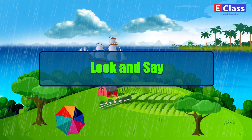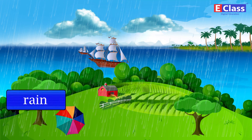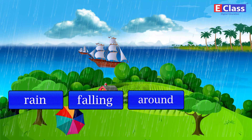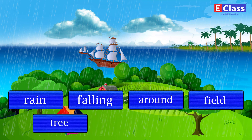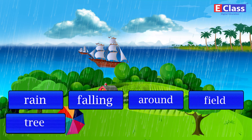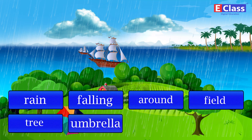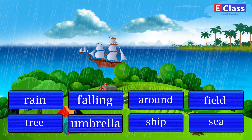Look and say: Rain. Falling. Around. Field. Tree. Umbrella. Ship. Sea.